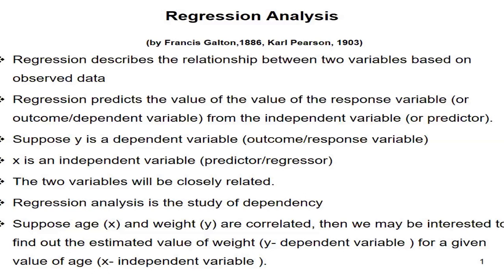The dependent variable — also called the outcome or response variable — is denoted by y, and the independent variable — also known as the predictor or regressor — is denoted by x. Please remember this terminology; these are very important. They have different names but refer to the same things: y is the dependent, outcome, or response variable, and x is the independent, predictor, or regressor.